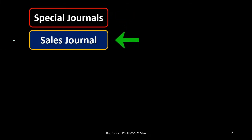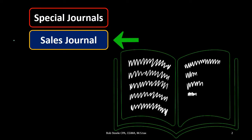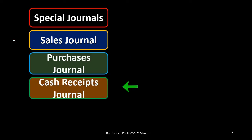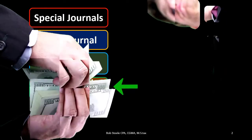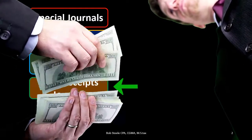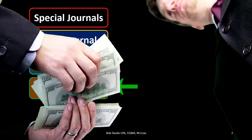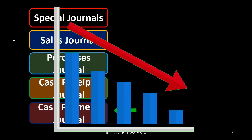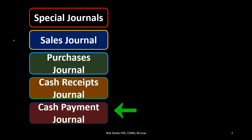The types of special journals will typically be a sales journal — we're going to group sales transactions into the sales journal. Then we have the purchases journal, where we group purchase transactions. The cash receipts journal covers any transaction where we receive cash, where cash is going up. And then the cash payments journal covers any time cash is going down, when we have cash payments.